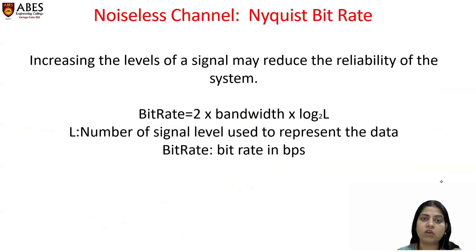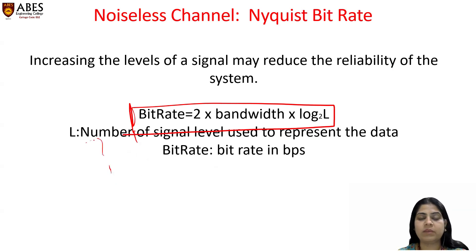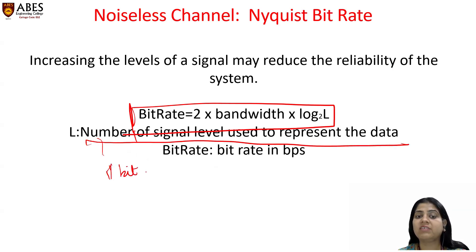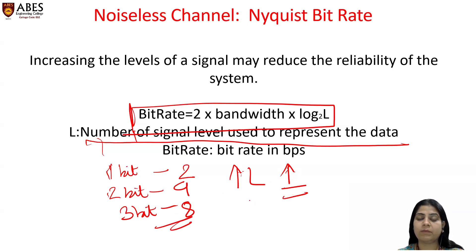Theoretically, there are two formulas: one for a noiseless channel and another for a noisy channel. For the noiseless channel, there is the Nyquist bit rate formula: Bit Rate = 2 × Bandwidth × log₂(L), where L is the number of signal levels used to represent the data. From this formula, we can see that if we increase the number of levels, the bit rate increases. Theoretically this is correct, but practically it is not feasible.